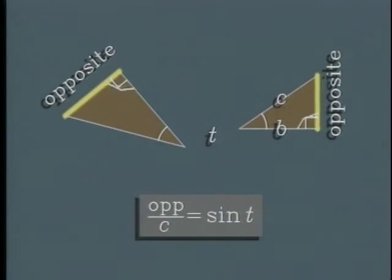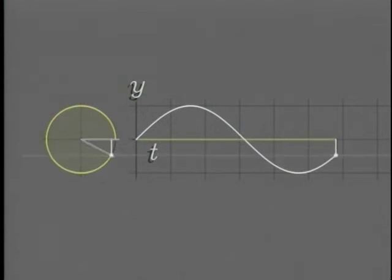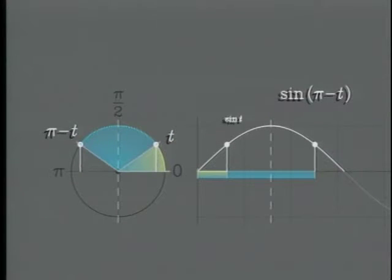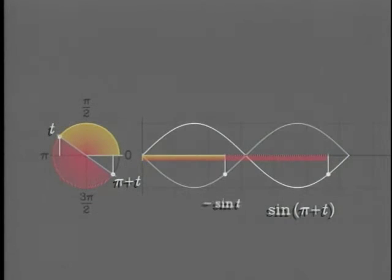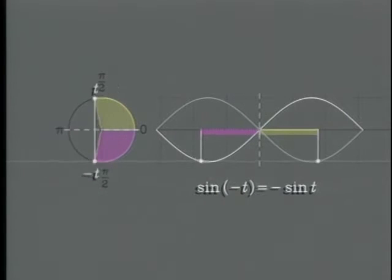But the sine is best known as the ratio of sides of a right triangle, or as the vertical position of a point on a circle. The symmetry of the curve shows some algebraic trigonometric identities. Translational symmetry of the sine wave gives rotational symmetry of the circle, and mirror symmetry of the circle is mirror symmetry of the wave.